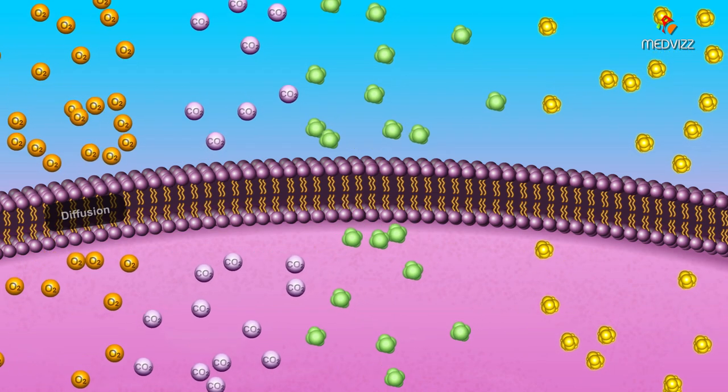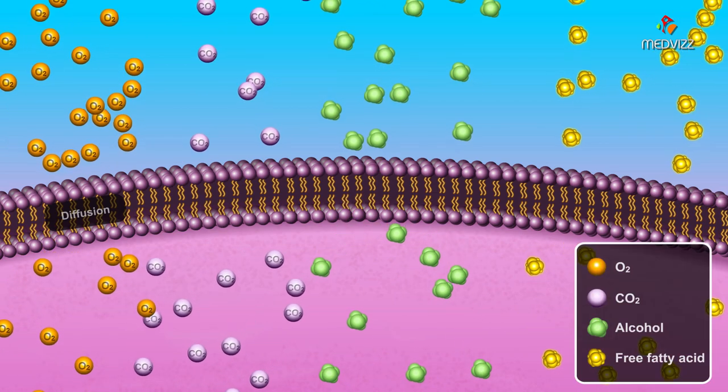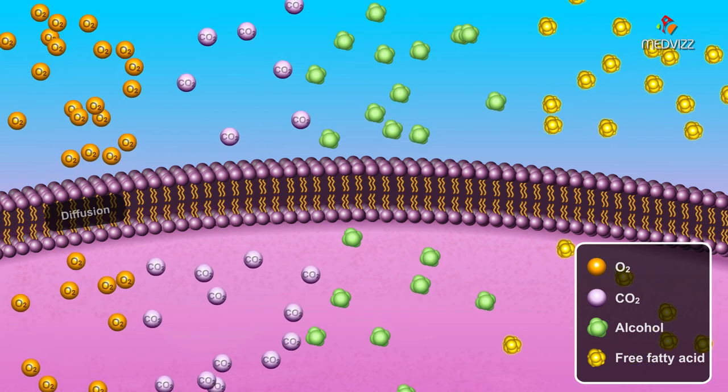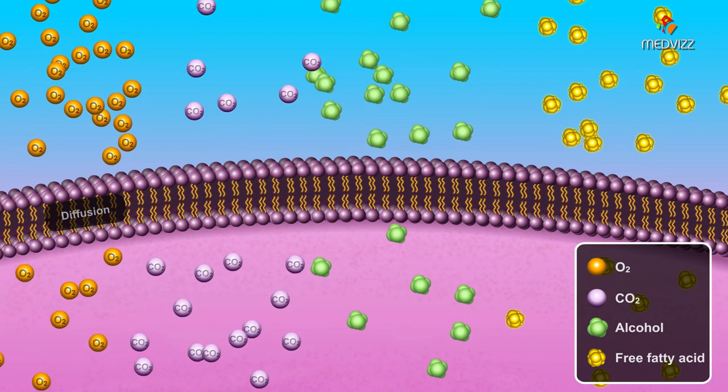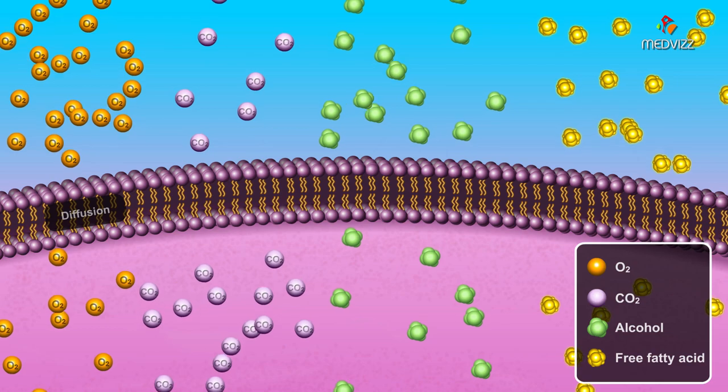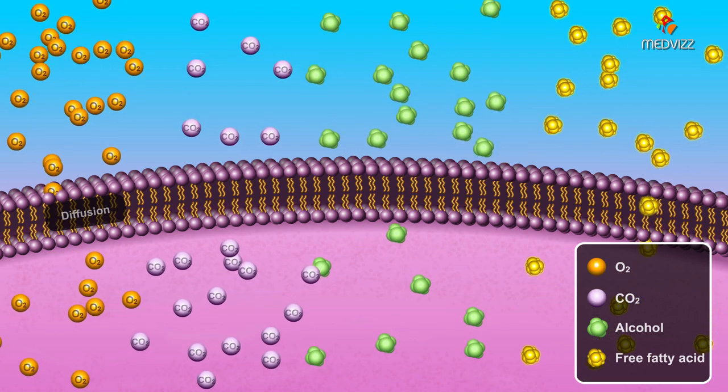Small uncharged molecules, such as dissolved oxygen, dissolved carbon dioxide, small alcohols, and small fatty acids, can freely diffuse through the cytoplasmic membrane.